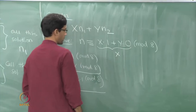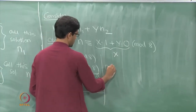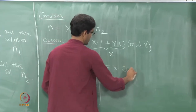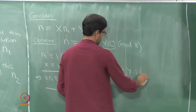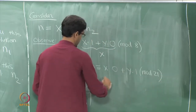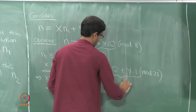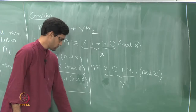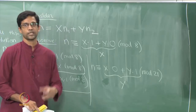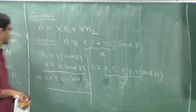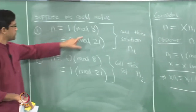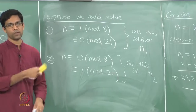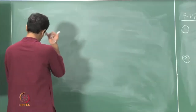Therefore n is indeed congruent to x mod 8. By the same logic, looking at congruences modulo 21, n1 is congruent to 0 and n2 is congruent to 1, giving y. So n turns out to be congruent to y mod 21. The key point is that to solve the general problem, it is enough to solve two simple problems — the 1,0 and 0,1 congruences for mod 8 and mod 21. This is the classic 0-1 idea.